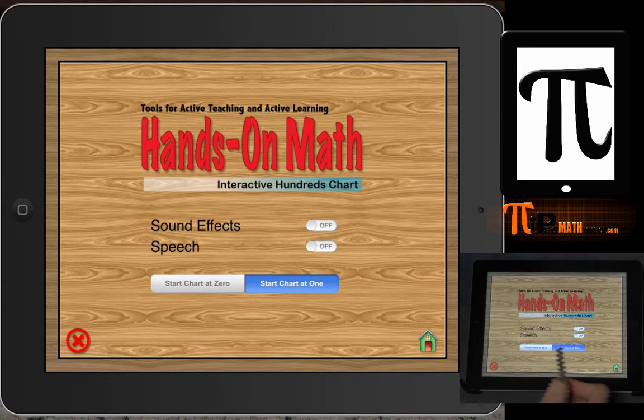The main options here are: do you want to start the chart at zero or do you want to start the chart at one? Typically, we start the chart at one when we're building early number concepts in our counting numbers and seeing the patterns in counting from one to 100.